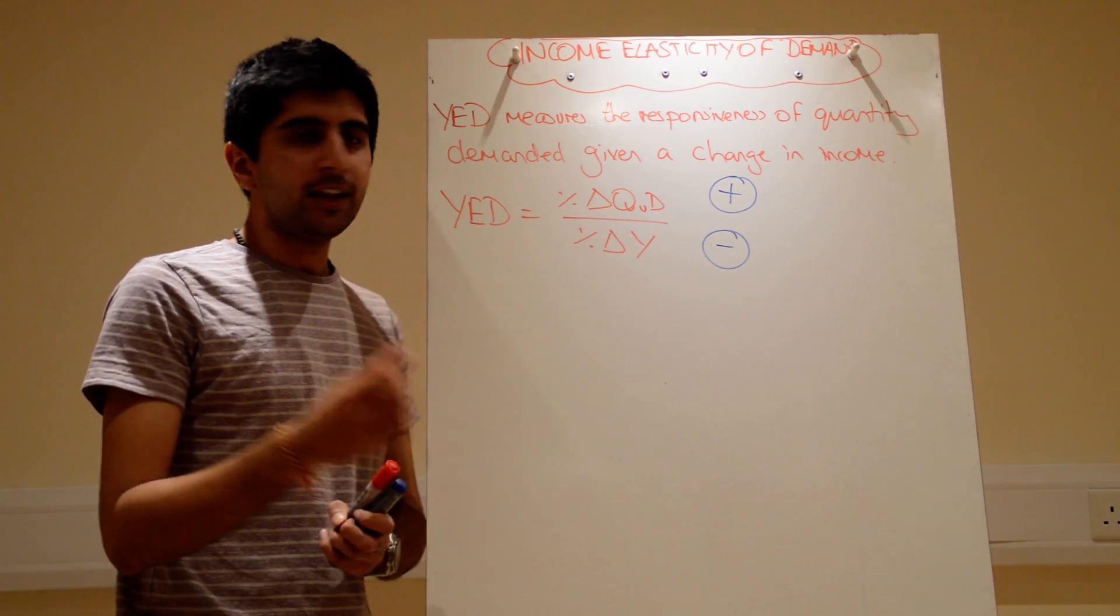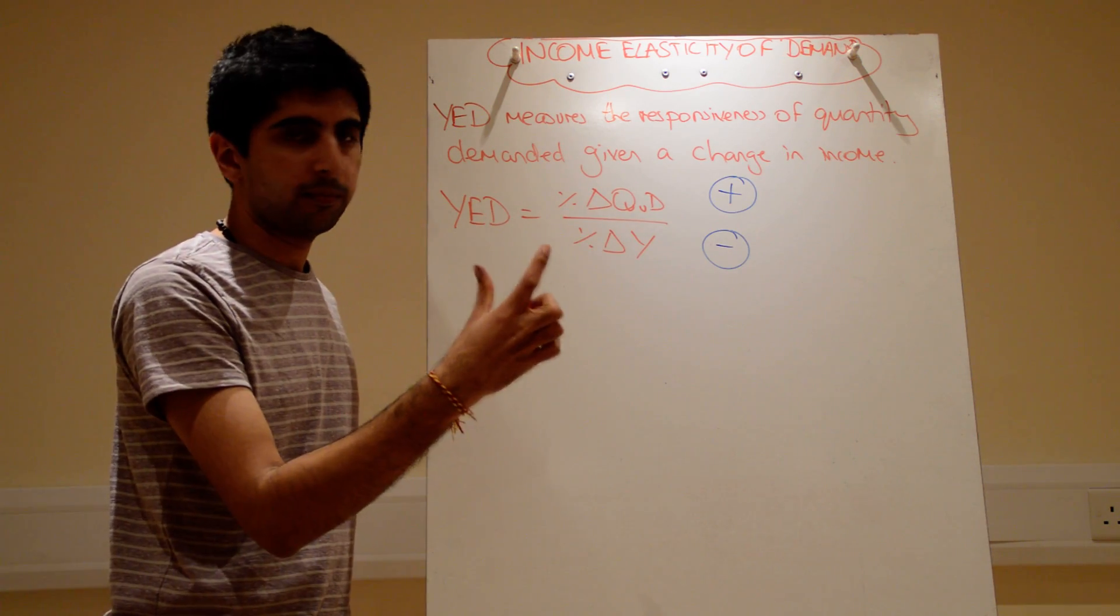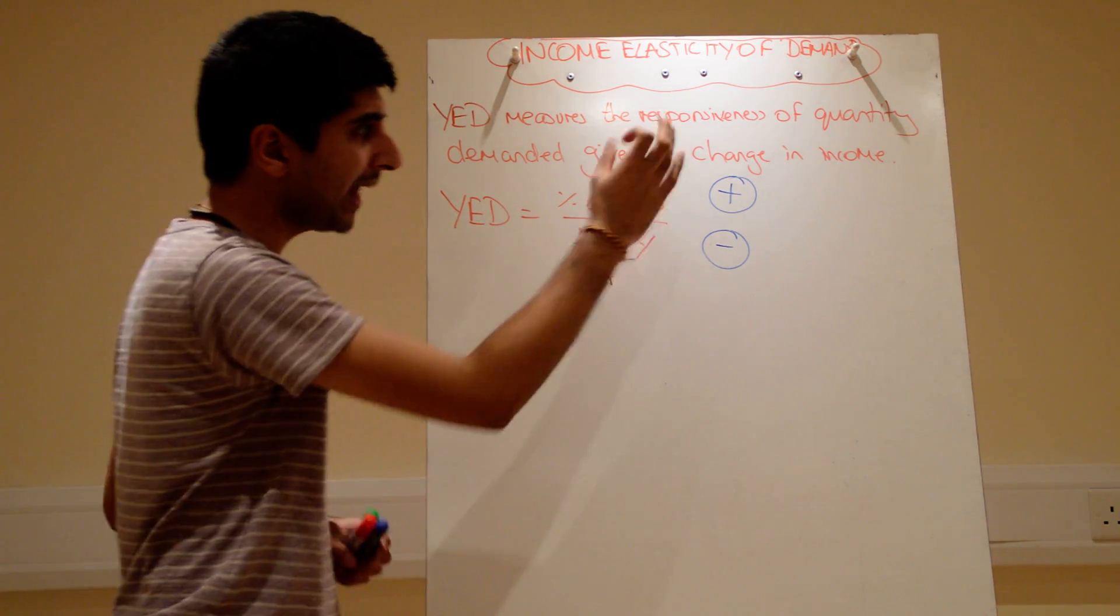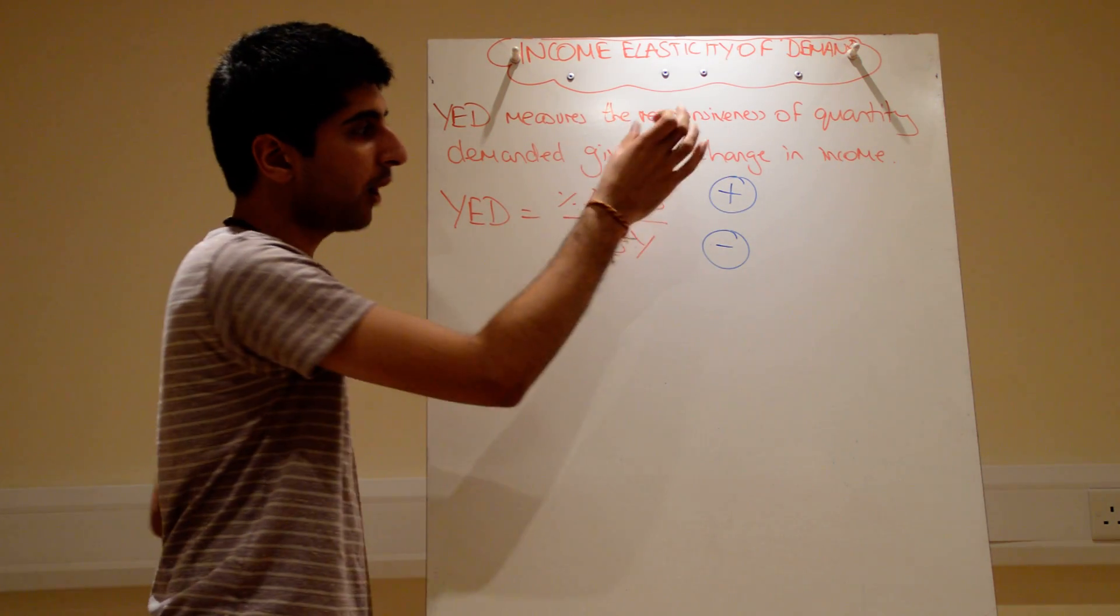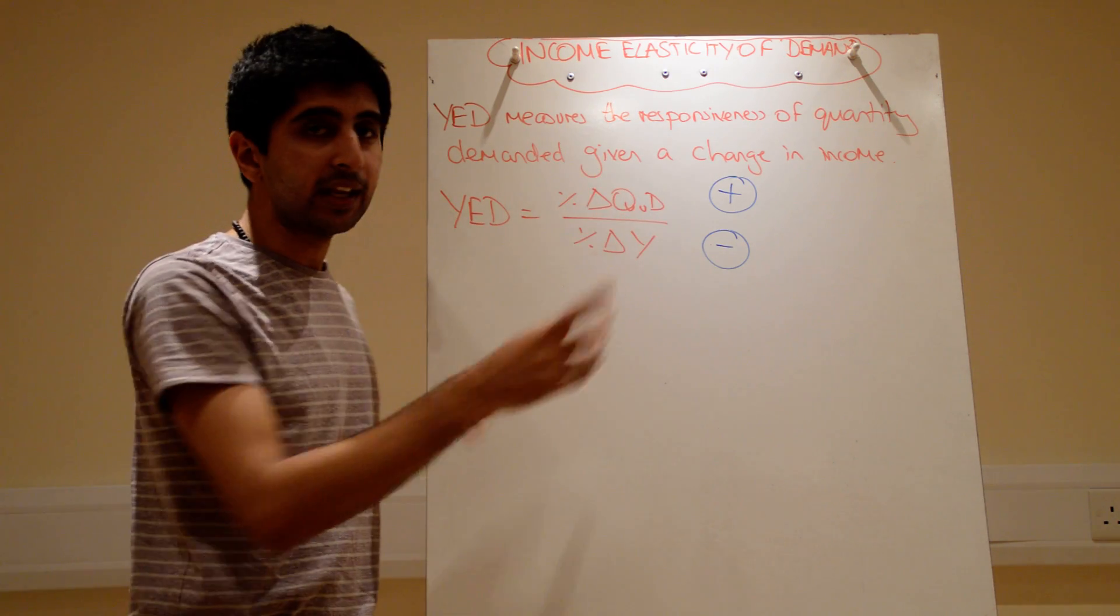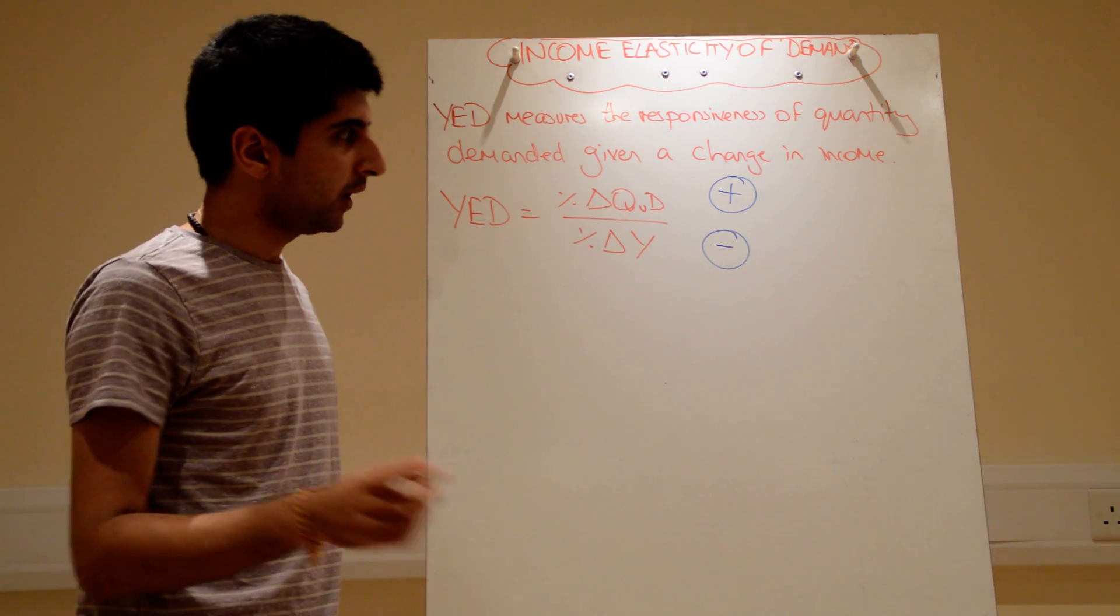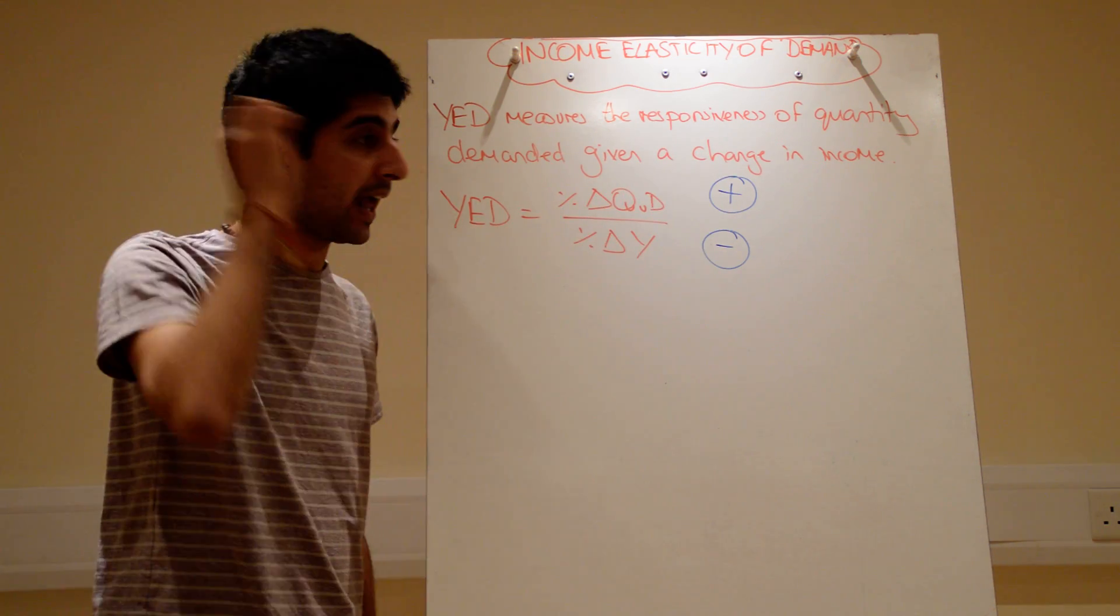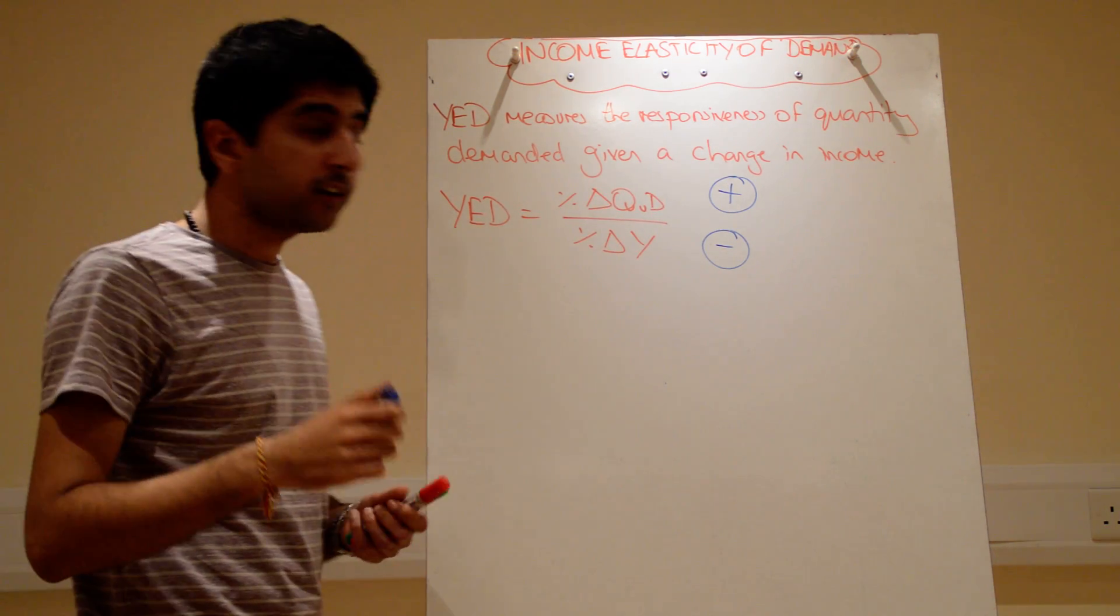Now, remember with PED, our figure would be negative. Whereas in price elasticity of supply, our figure would be positive. Now, with YED, we can have either a positive or a negative figure. And the sign is very important. So we have to stick signs into our equation to make sure we get the right signs at the end. What do the signs mean?